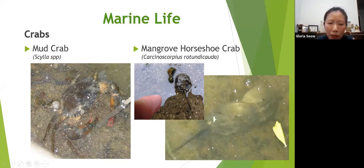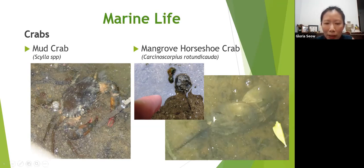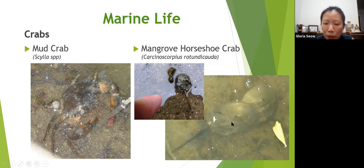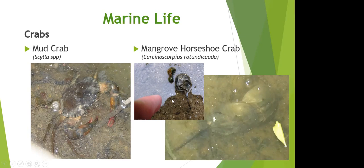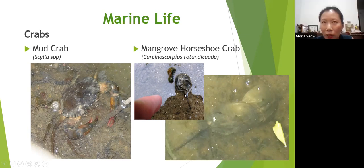There are three species of mud crabs in Singapore. The one pictured is likely the orange mud crab. The very large crabs eaten in seafood restaurants are usually the Sri Lankan crab, which is different from the local ones and slightly larger. The horseshoe crab is sometimes called a living fossil because it's been around for 400 million years. I photographed a pair breeding in Pasir Ris Park at night. I also photographed a very baby horseshoe crab about the size of a 20-cent coin.